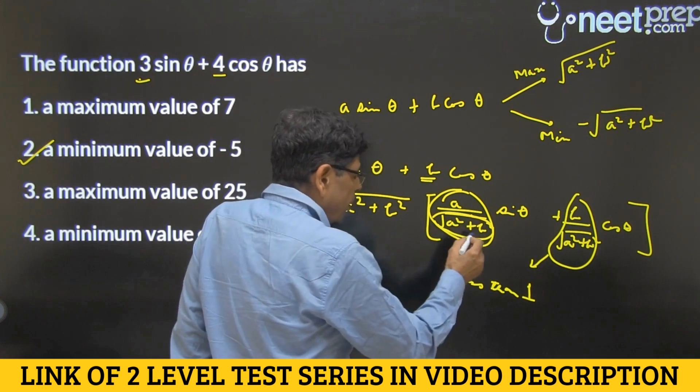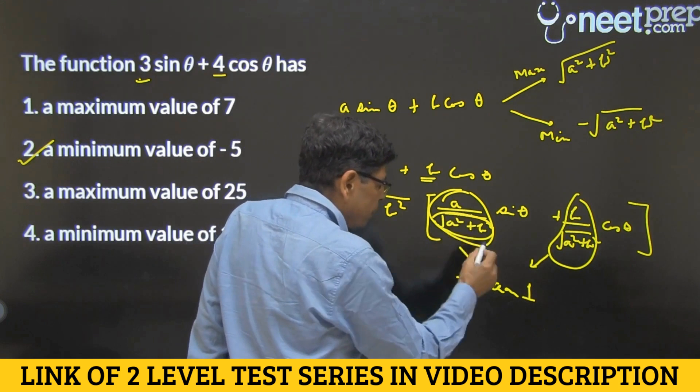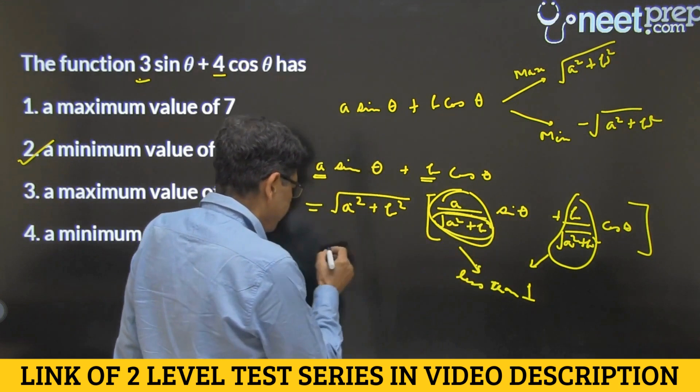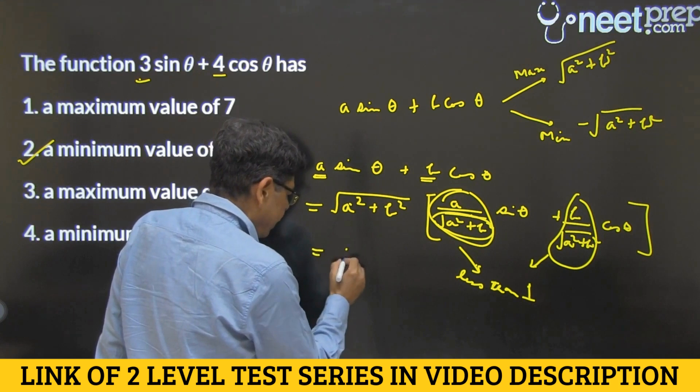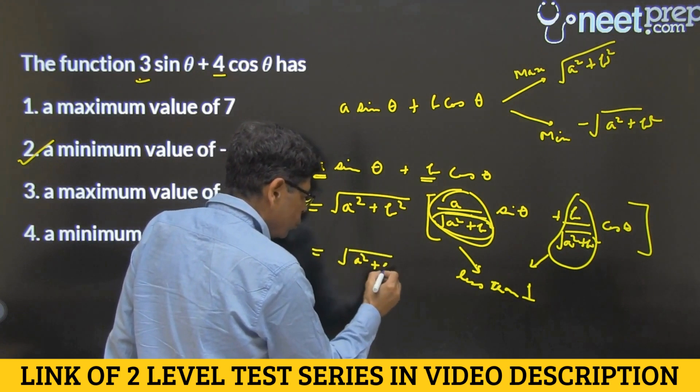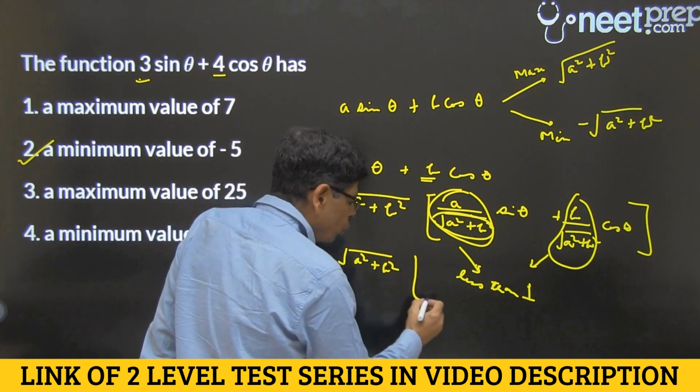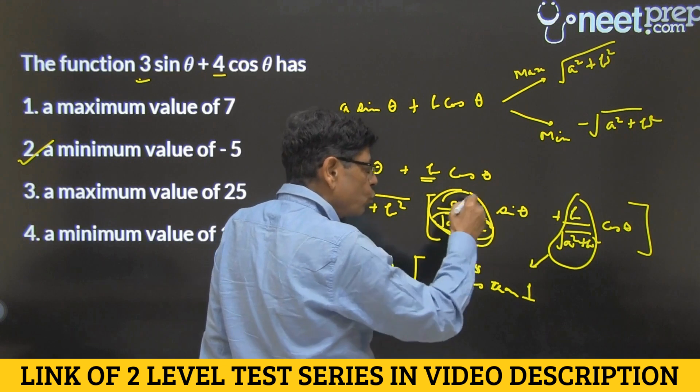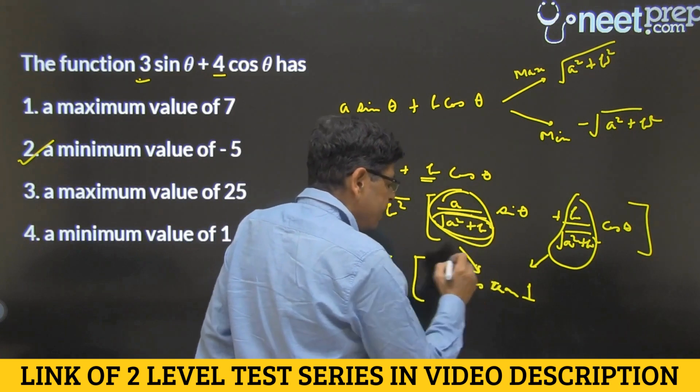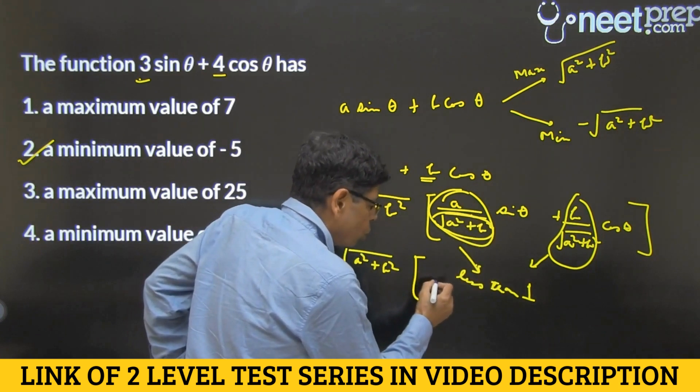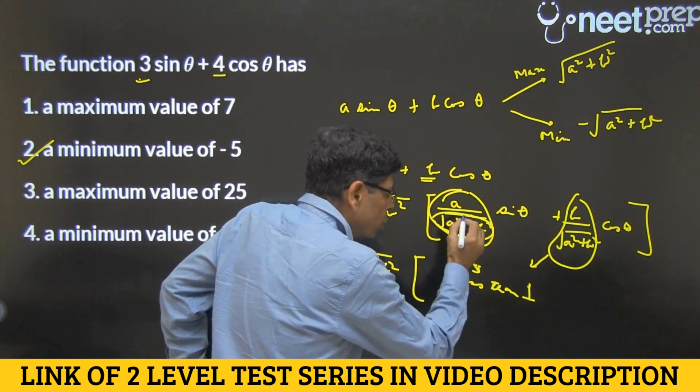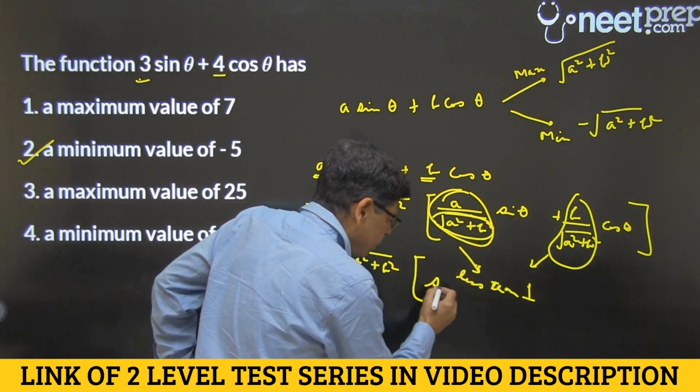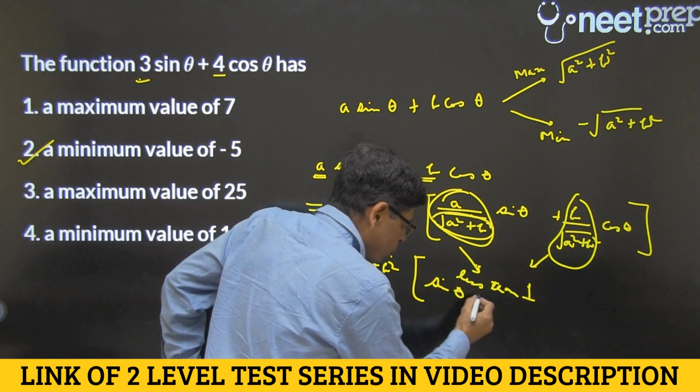Now any number which is less than 1 can be written as sin or cos of some number. So I will like to write this for example as cos(φ). That means if you go through the Trigo tables, you will find some angle φ whose cosine will be this number less than 1. So I write it as cos(φ). So I have got cos(φ)sin(θ). I will write it the other way around, sin(θ)cos(φ).